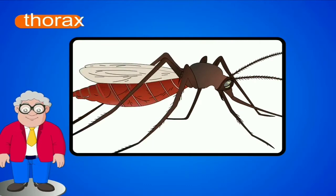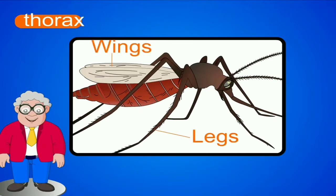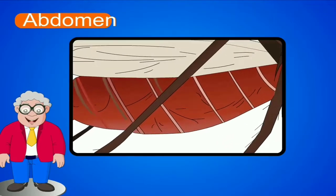Number 2: Thorax. It has six, that is three pairs, jointed legs and four, that is two pairs, wings. Number 3: Abdomen. Insects have holes on the abdomen; they breathe through these holes.